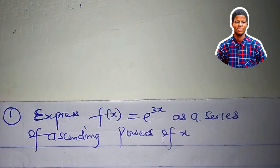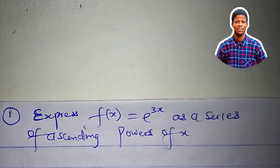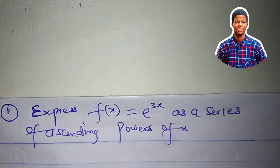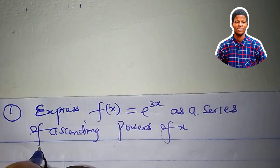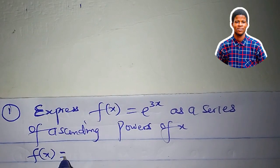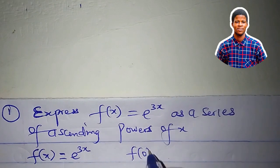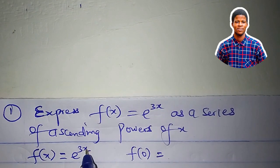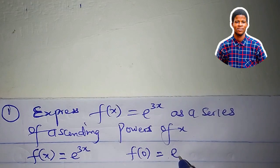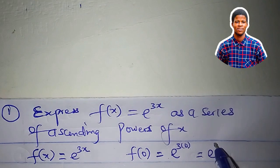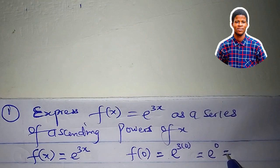The first question: express f of x equal to e to the power of 3x as a series of ascending powers of x. Let's go ahead and expand e to the power of 3x using the Maclaurin series theorem. We are given that f of x equals e to the power of 3x, so we need to find f of 0. In place of x we write 0: e to the power of 3 times 0 is e to the power of 0, and anything to the power of 0 is 1. So f of 0 equals 1.